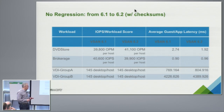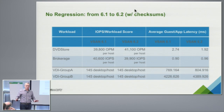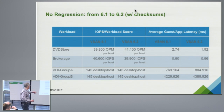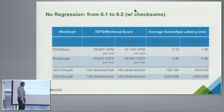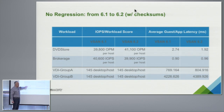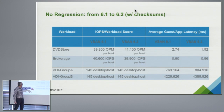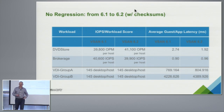There is no regression between 6.1 and 6.2, even though we have all those checksums on. We have two transactional cases and View Planner scores here. As you can see, practically there is no difference. In some cases the latency is actually better because we optimized our data path a little bit in 6.2.